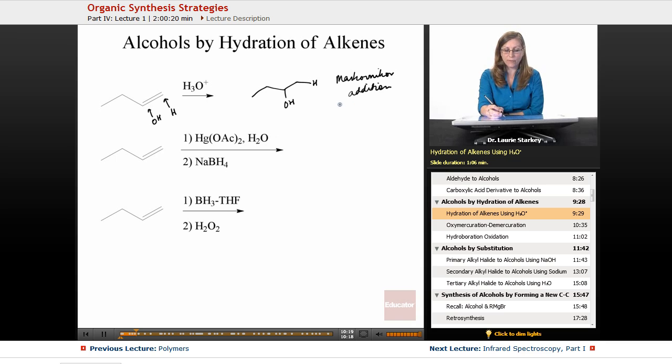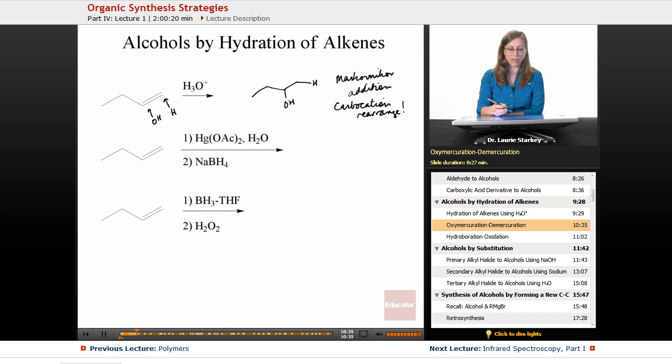Now this mechanism involves a carbocation. And remember, carbocations can rearrange, and we can have some other issues going on. So this H3O+ conditions are not suitable for all alkenes, hydration of alkenes. So another one we could do, this is called oxymercuration reduction, or oxymercuration demercuration. And this synthesis, this two-step procedure, is just a more controlled way to do the same transformation, a Markovnikov addition of water across the pi bond.